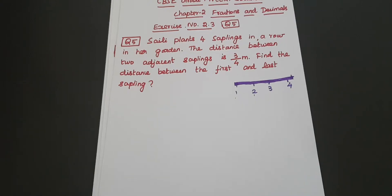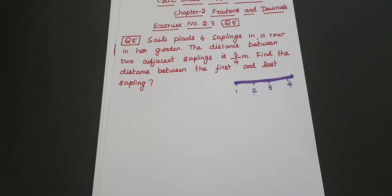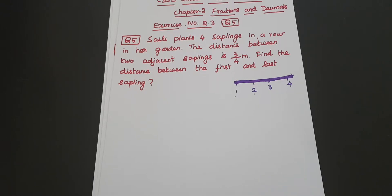Good morning students. CBIC grade 7 NCERT solution chapter number 2, fractions and decimals, exercise number 2.3, question number 5. Saili plants 4 saplings in a row in her garden. The distance between 2 adjacent saplings is 3/4 meter.